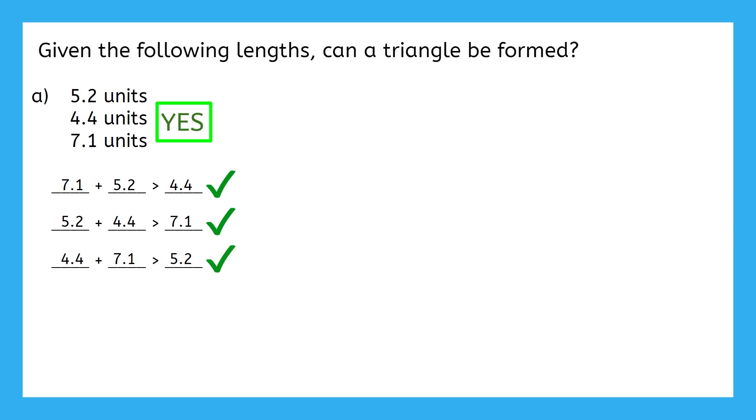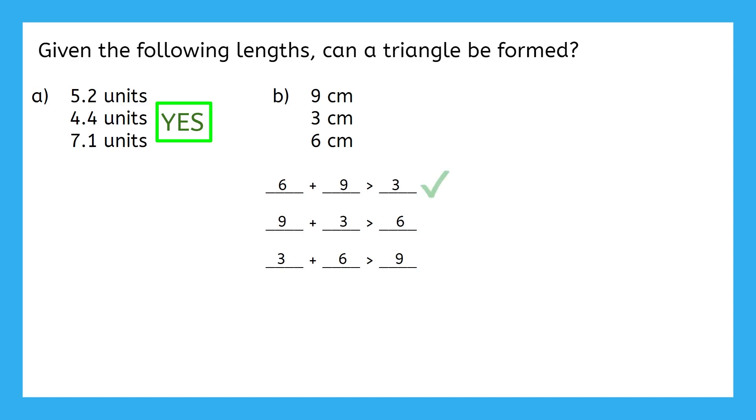Let's move on to part B. Do you think these sides can form a triangle? And if so, how do you know? Let's make three inequalities again. Do any two sides always add up to be more than the third side? No, one of these isn't true. 3 plus 6 is not greater than 9, it's exactly equal to 9. So we cannot make a triangle from these lengths.